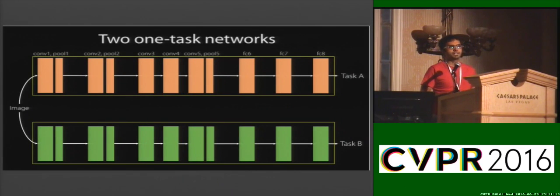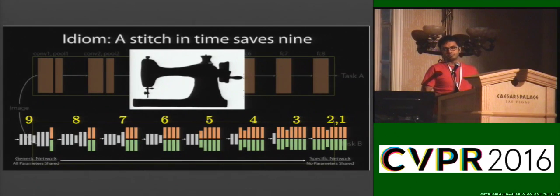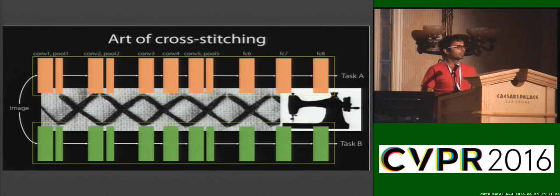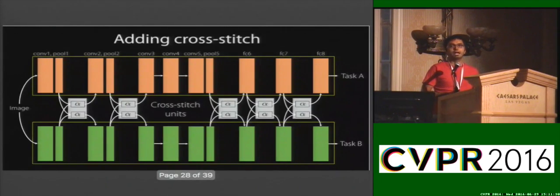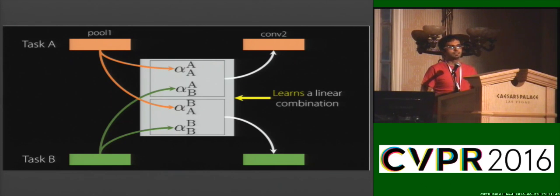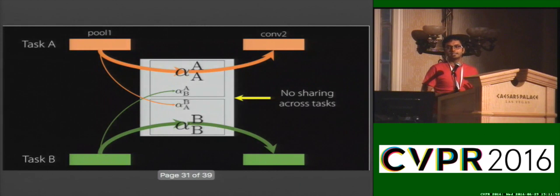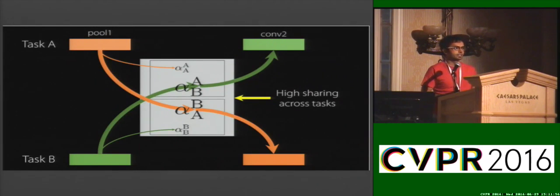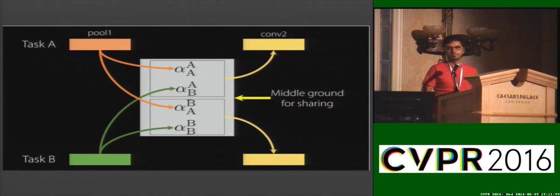So given two one-task networks, how do we combine or fuse them? According to an ancient idiom, a stitch in time saves nine — so maybe if we stitch things right, we won't have to train nine networks. We do just that and use cross-stitching to combine two networks. More specifically, we add cross-stitch units between them, and these units model information sharing by learning linear combinations. A cross-stitch unit takes input activations from two tasks and learns a linear combination to produce outputs. Depending on the learned values of this linear combination, it can decide to have no sharing across tasks, high sharing across tasks, or find a middle ground.